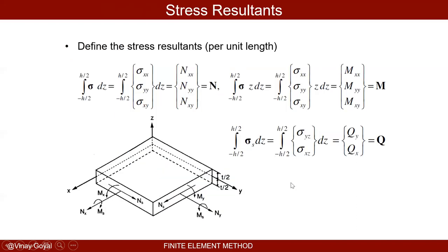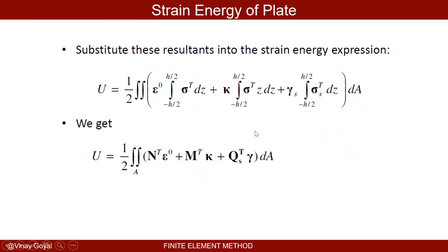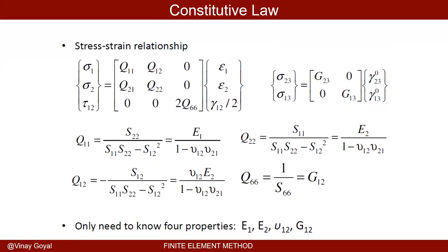Once I substitute N bold, M bold, and Q bold into the strain energy expression, the equation is vastly simplified. Now I have to apply the constitutive law — again, top-level view, we're not going into extensive details. I'm going to do it for composites. The stresses in the local material orientation, where direction 1 is along the fibers and direction 2 is transverse to the fibers, gives us the constitutive relationships. We already covered the constitutive law for the three-dimensional domain, so it should be straightforward to determine these quantities.